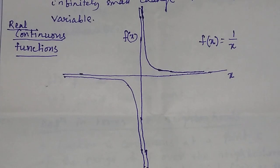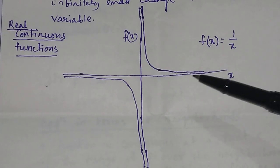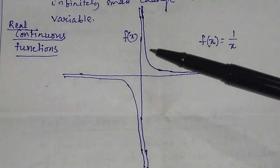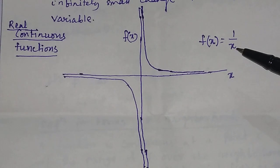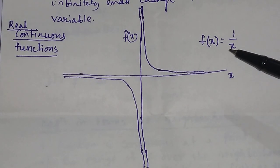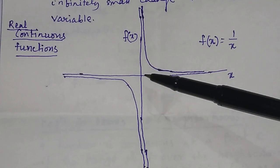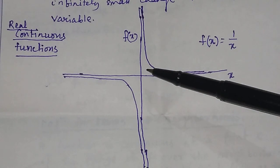Given an example of a real continuous function: f(x) = 1/x. This is the graph of the continuous function f(x) = 1/x. The function f(x) = 1/x is continuous in the domain of the real numbers except at 0. At 0, the function is not continuous — it is discontinuous.